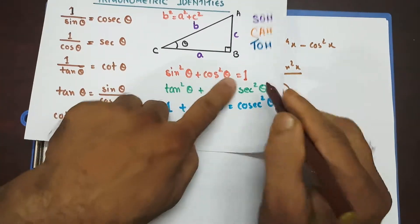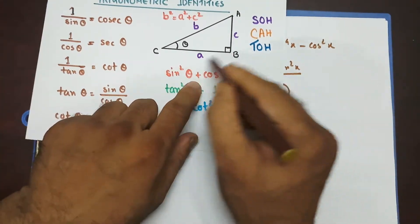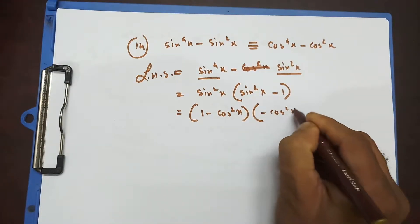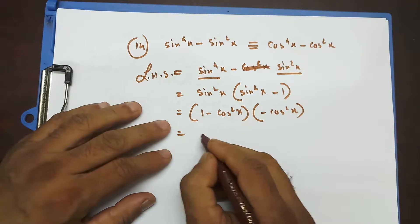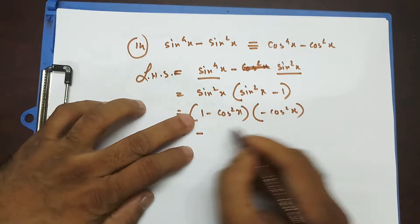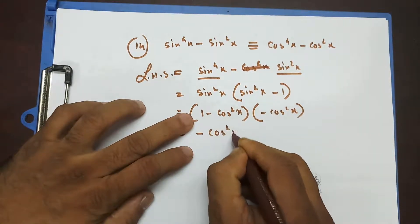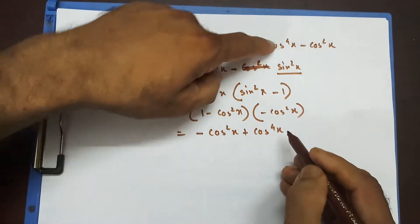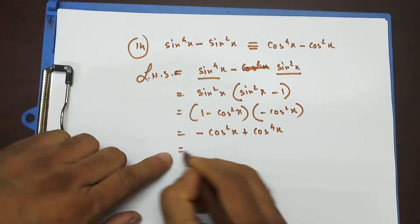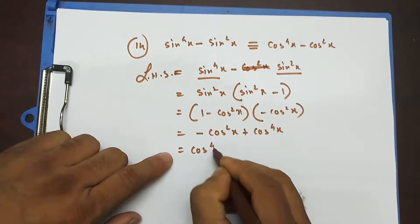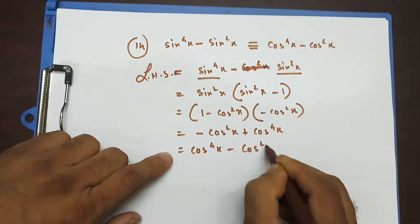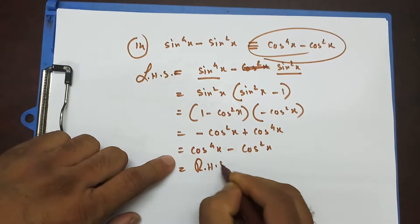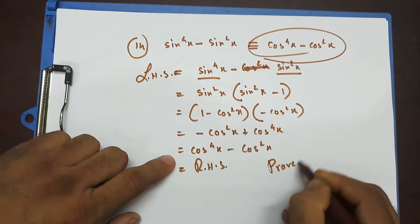If minus 1 comes across, cos² goes there, giving minus cos²x. Taking the bracket off: multiplying through gives minus cos²x times minus, which is plus cos⁴x. Rewriting that as cos⁴x minus cos²x — and that's my right hand side. So that's proved.